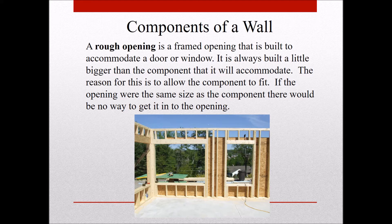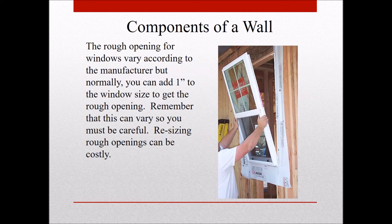A rough opening is always built a little larger than whatever it's built to accommodate. So if we had a six-foot window we would probably build the rough opening six feet one inch — this allows us to fit the window in easily. Rough openings can vary depending on what the manufacturer recommends. Normally you can add one inch to the window size, so a three-foot window would make the rough opening three feet one inch.